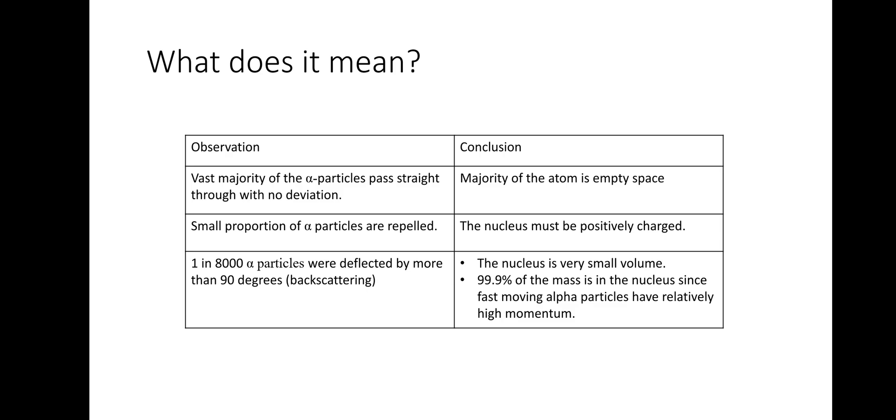And the last point, approximately one in 8,000 alpha particles were deflected by more than 90 degrees, which is called backscattering. And the conclusion was that the nucleus must be very small in volume. And as I've already said, 99.9% of the mass must be in the nucleus, as with 99.9% of the atom is empty space, the vast majority of that mass must be in the nucleus, since fast-moving alpha particles have relatively high momentum. Remember, if you want to make some notes, please just pause, and then we'll move on.